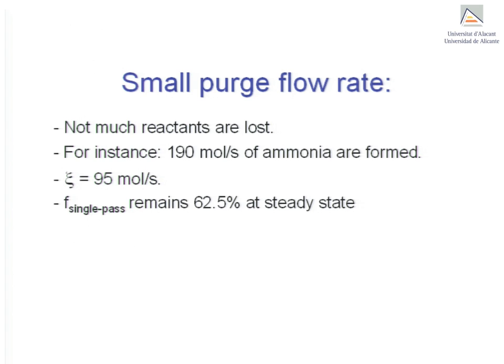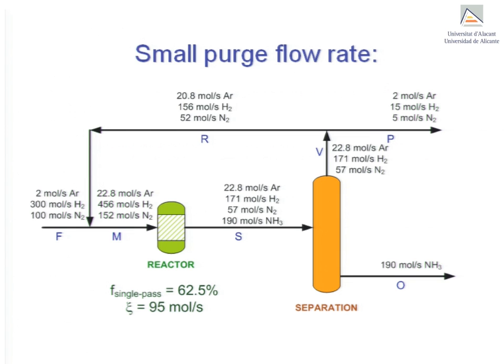If an appropriate purge flow rate is used to maintain steady-state operation, this is the flow chart diagram for the production of ammonia from nitrogen and hydrogen containing an inert substance. The single pass conversion is 62.5% and the extent of reaction is 95 moles a second. We see that because of the purge stream, the inert is removed from the system and as a result does not accumulate.